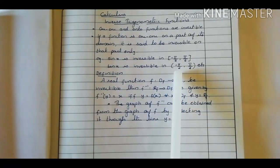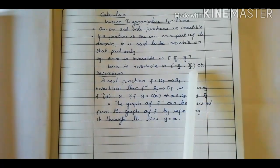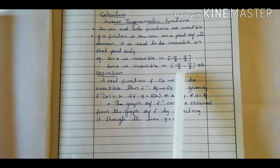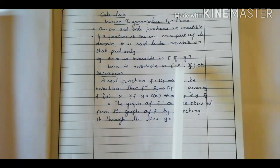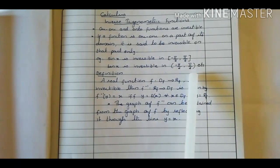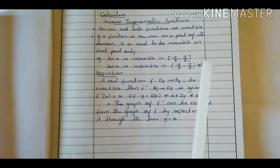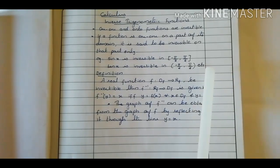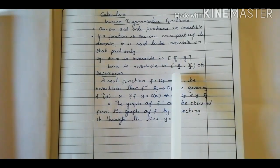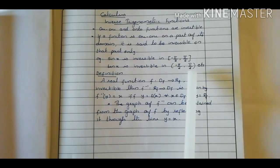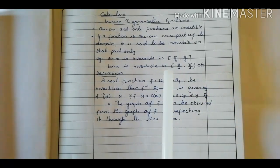Tan x is invertible in the open interval minus pi by 2 to pi by 2. We know that tan(−π/2) is minus infinity and tan(π/2) is plus infinity. So if you take this open interval minus pi by 2 to pi by 2, you will get values from minus infinity to infinity — all distinct values. So the image of tan x for this interval minus pi by 2 to pi by 2 is distinct.